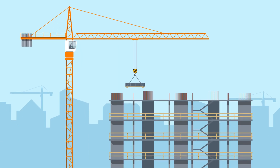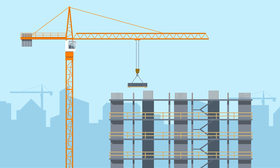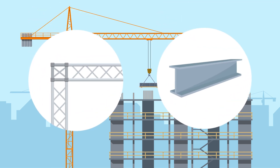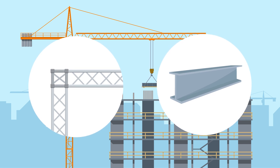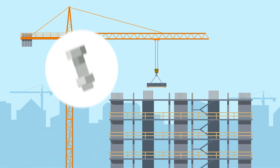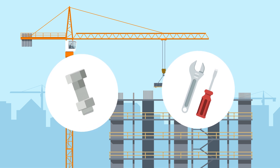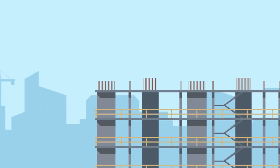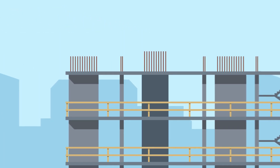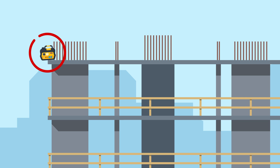In the construction industry, the list of objects that commonly fall range from large items, such as roof trusses and steel beams, to small items such as fasteners and small hand tools. A falling object, sometimes called a dropped object, is any item or object that falls, or has the potential to fall, from its previous position.